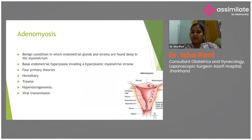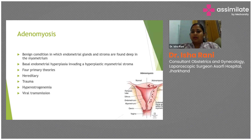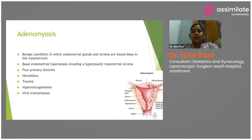A stands for adenomyosis — a benign condition in which endometrial glands and stroma are found embedded deep in the myometrium. It can be due to basal endometrial hyperplasia invading the myometrial stroma. Causes include hereditary factors, trauma during childbirth, dilatation and curettage, hyperestrogenism, or viral transmission theories, though no single cause can be pinpointed with certainty.